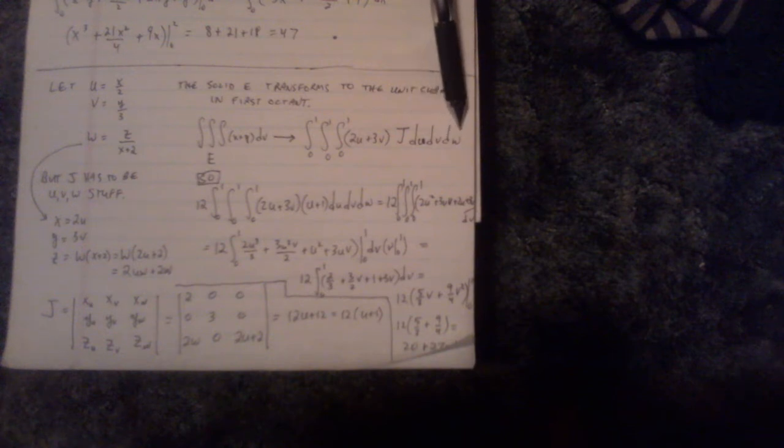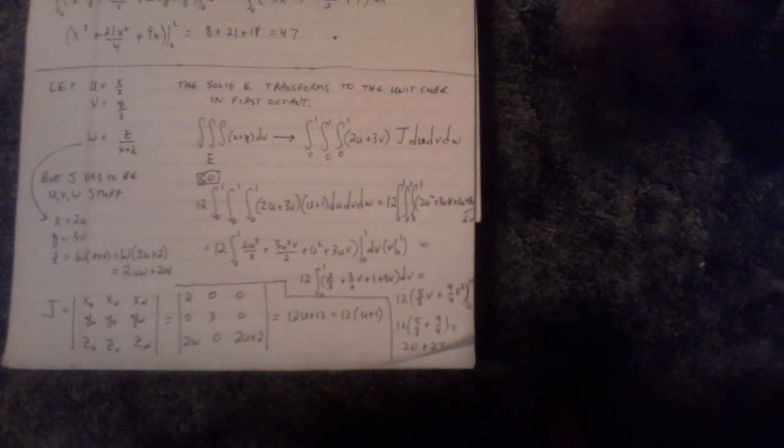But the big deal behind the Jacobian is how do you know what to do for the Jacobian? Well, here's how you know what to do. I have formulas that say u equals x over 2, v equals y over 3, etc. I also have x equals 2u, y equals 3v, and z equals this 2uw plus 2w thing, which I get from substituting. So these formulas have x equals y equals z equals in terms of u, v, w, and then I have u, v, w equals in terms of x, y, z. Which one do I use for the Jacobian? And here's how I know. Look, it's u, v, w. Du, dv, dw. This is u, v, w stuff. So the Jacobian has to be made of u, v, and w stuff. So I'm going to use these for my partial derivatives.